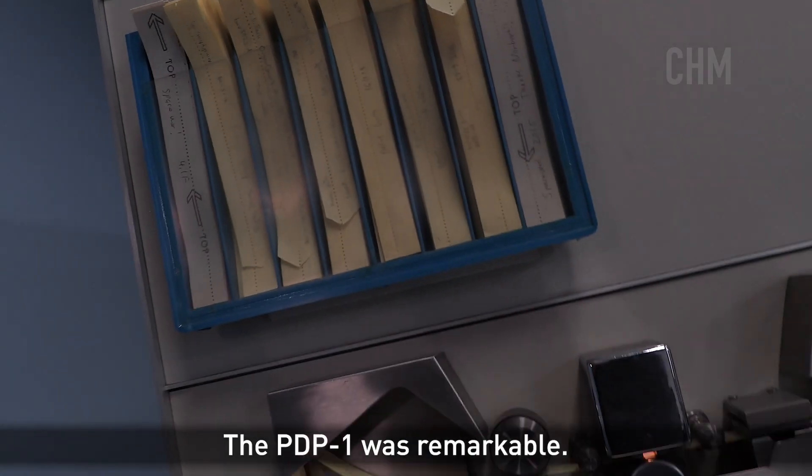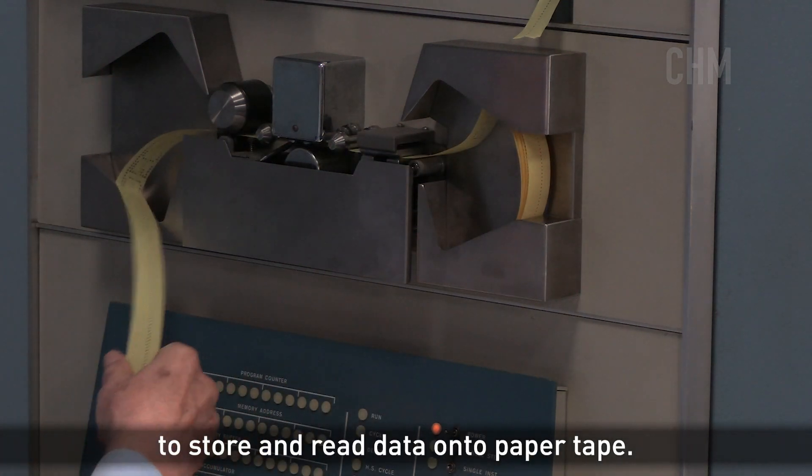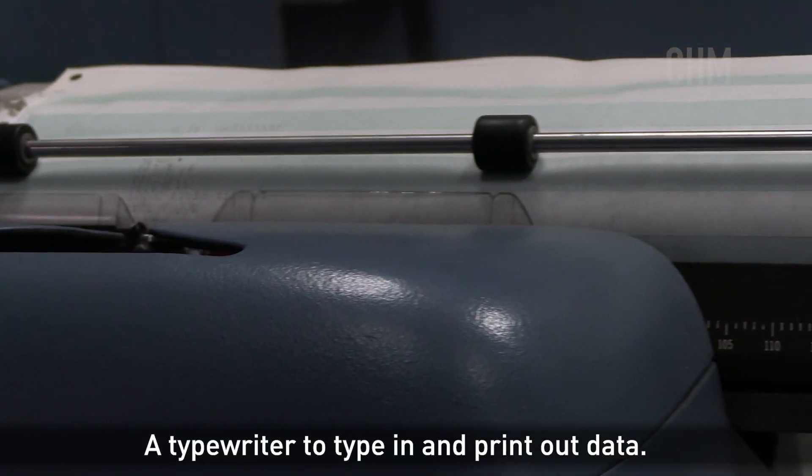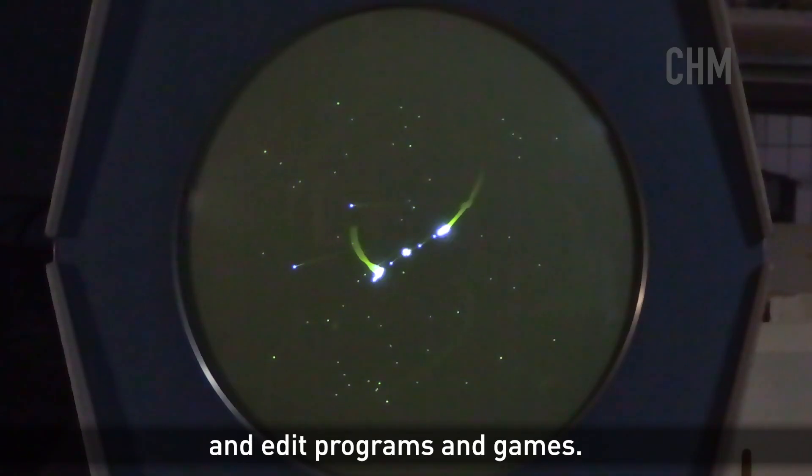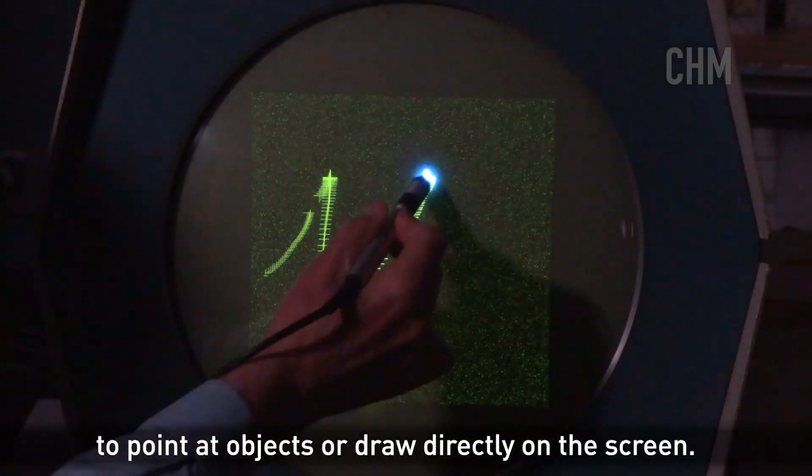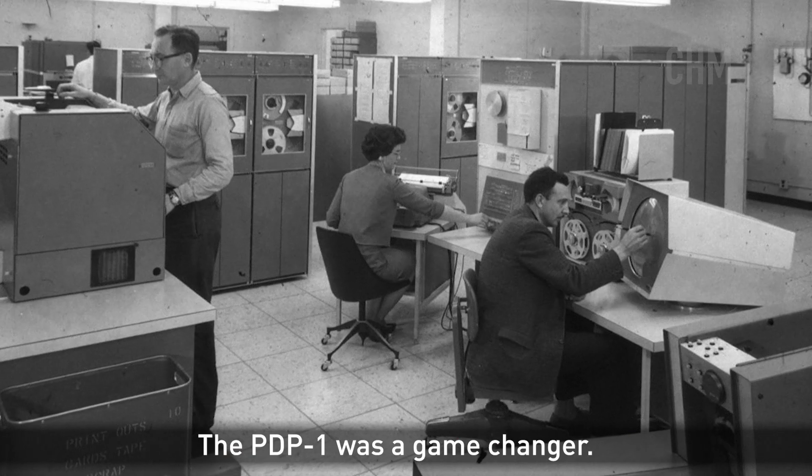The PDP-1 was remarkable. It had a paper tape reader and punch to store and read data onto paper tape, a typewriter to type in and print out data, a cathode ray tube Type 30 display that allowed programmers to view and edit programs and games, and finally it had a light pen connected to the monitor to point at objects or draw directly on the screen.